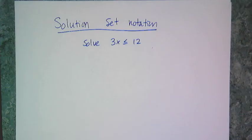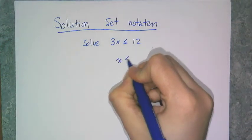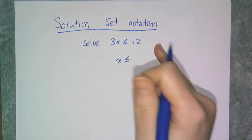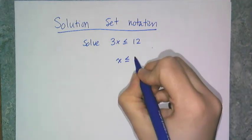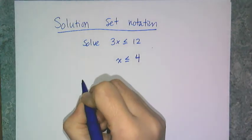If we look at the example I just graphed and talk about solution set notation for inequalities, and I say solve 3x is less than or equal to 12, we know the simplified version is x is less than or equal to 4. How to write that in solution set notation is a little bit different because it's not a single number.